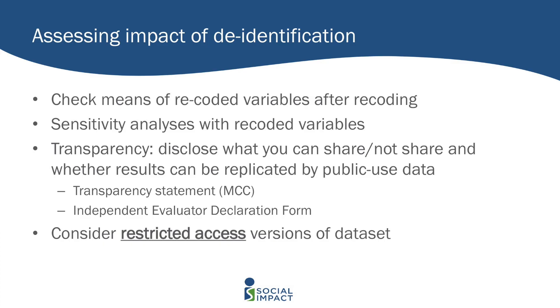After you've done de-identification, you obviously want to see what the impact is, because you're trying to balance this against usability. You don't want to give somebody a data set that has no analytical use. You want to look at how much it affects your analysis and the distribution of key variables. And if anything is different, you want to be transparent about that — disclosing through transparency statements or declaration forms posted along with the data set. If anyone pulls down the data set, they would have access to documentation saying: we did the following things to protect respondents, and the results in our report are not fully replicable with the data you have. That's where restricted access comes in — if someone says they want to use it for specific research purposes, they might be required to sign a non-disclosure agreement.